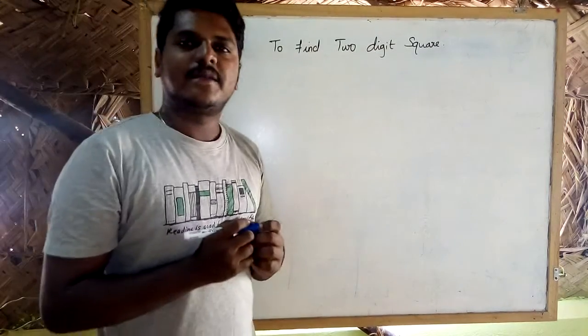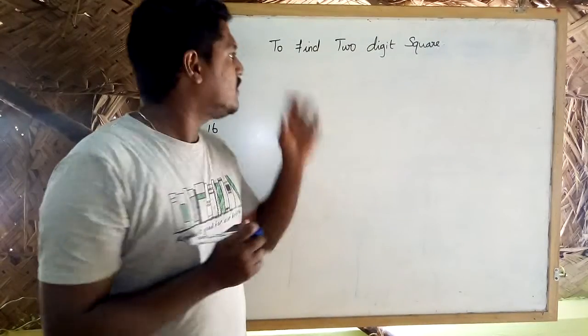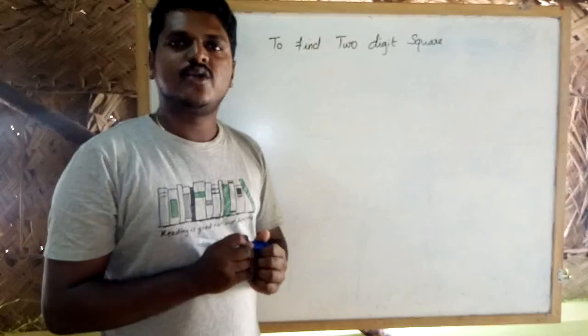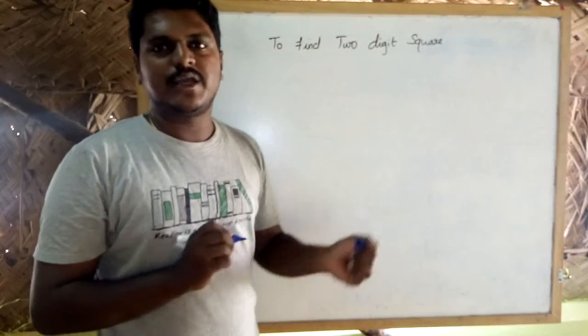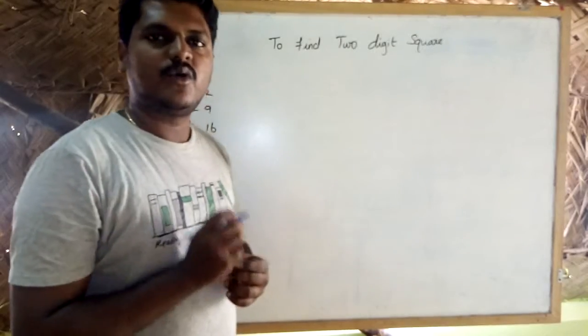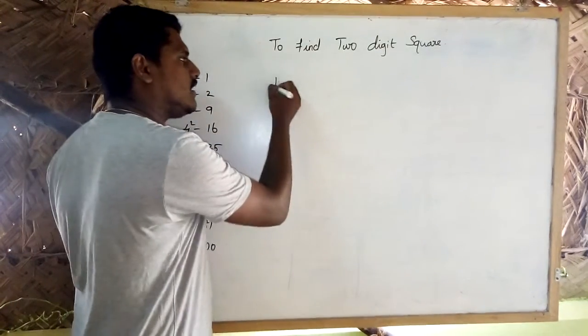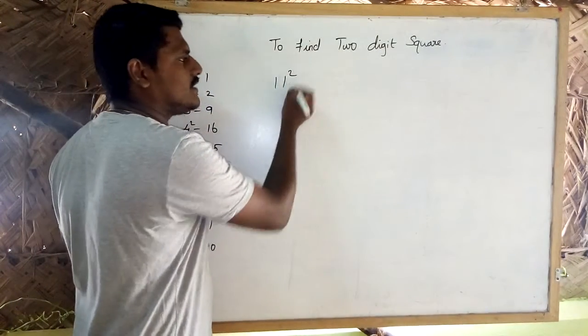Hi guys, how do we go? To find two digits square — two digits square is how many times we go. First example is simple: 11 square.